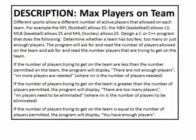Here is the description for a sample lab. Different sports allow a different number of active players on each team — the NFL allows 53, the NBA allows 13, baseball allows 25, and NHL hockey allows 23. Design a C or C++ program that determines whether a team has too few, too many, or just enough players. The program asks for the number of players allowed on the team and the number of players trying to get on the team, then displays the appropriate message including how many players are needed or need to be eliminated.